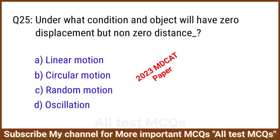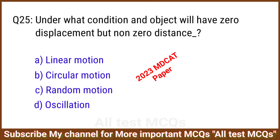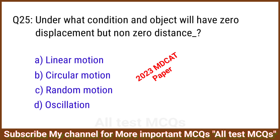Q25. Under what condition will an object have zero displacement but non-zero distance? The right answer is option B: Circular motion.